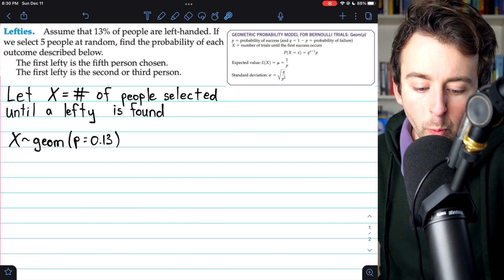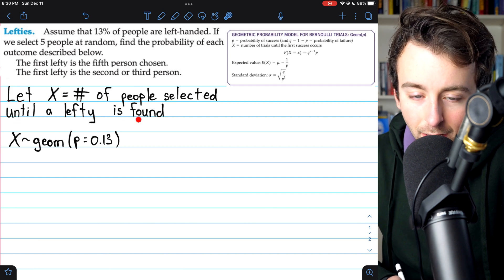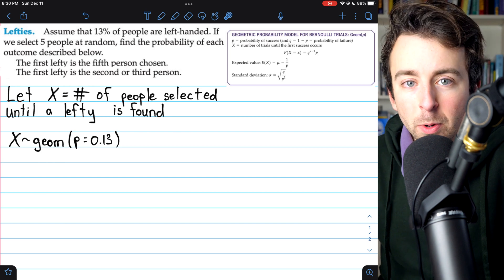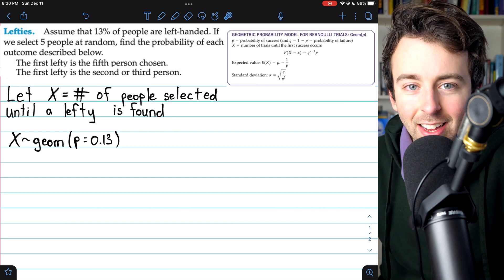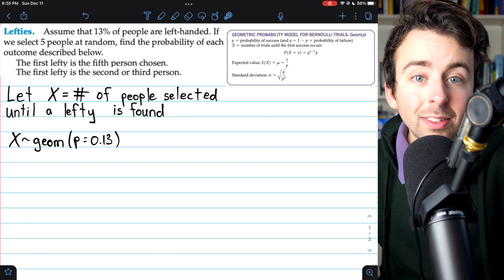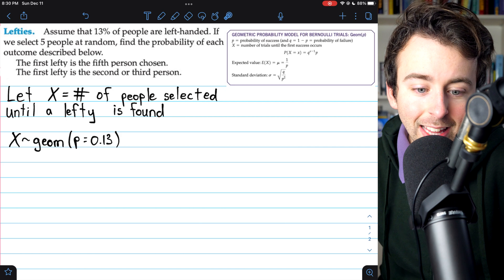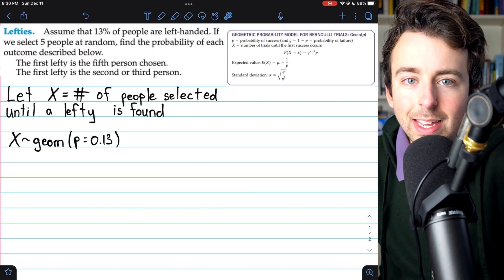So let's define our random variable. We'll say that X is the number of people selected until a lefty is found. Remember that we count the success. When we finally get that lefty, that is part of our count. So if we select two people that aren't lefties, but then the third person is a lefty, then X would be equal to 3.